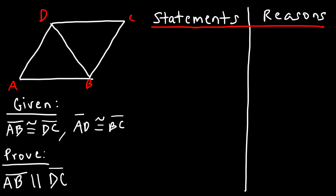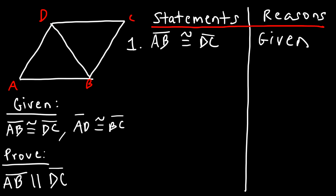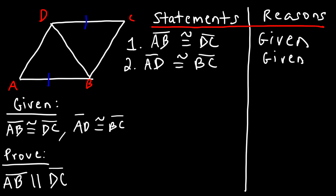It's always good to start with a given. Statement 1: AB is congruent to DC — that is given to us. Let's mark it on the figure. Statement 2: AD is congruent to BC — that is also given. Let's mark AD congruent to BC on the figure as well. Now, where do we go from here?